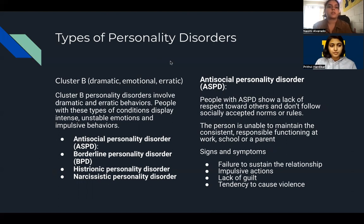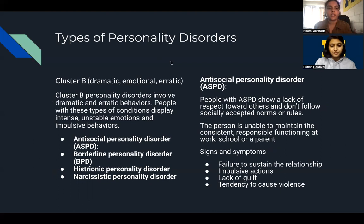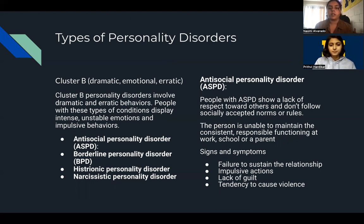Now I'm going to talk about Cluster B personality disorders. Cluster B is characterized by dramatic, emotional, and erratic behaviors. There are four disorders listed: Antisocial Personality Disorder, Borderline Personality Disorder, Histrionic Personality Disorder, and Narcissistic Personality Disorder. For Antisocial Personality Disorder, signs and symptoms include failure to sustain relationships, impulsive actions, lack of guilt, and a tendency toward violence.